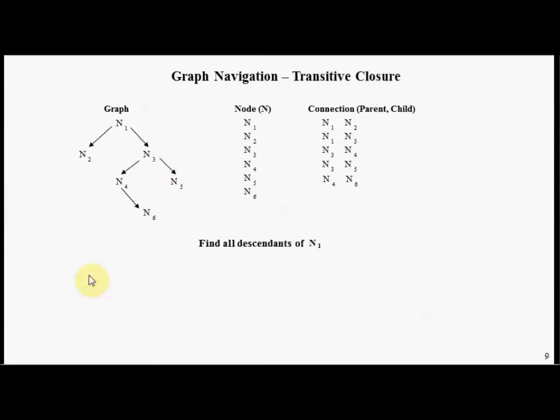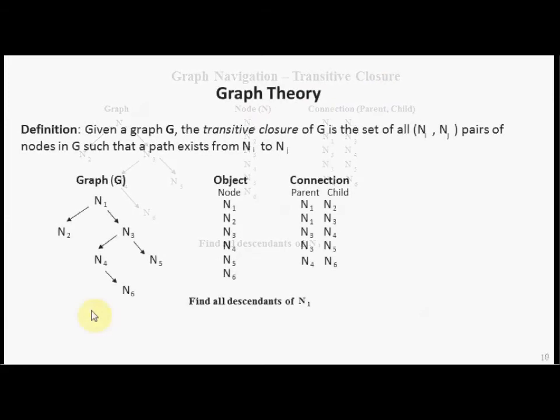The third navigational approach we're going to consider is with the use of something called transitive closure. The notion of transitive closure is a concept that is foreign to most people. So let's look at a definition. Given the graph G, the transitive closure of a graph is the set of all potential paths between all nodes in the graph. The transitive closure of a graph can be represented using a relational table.